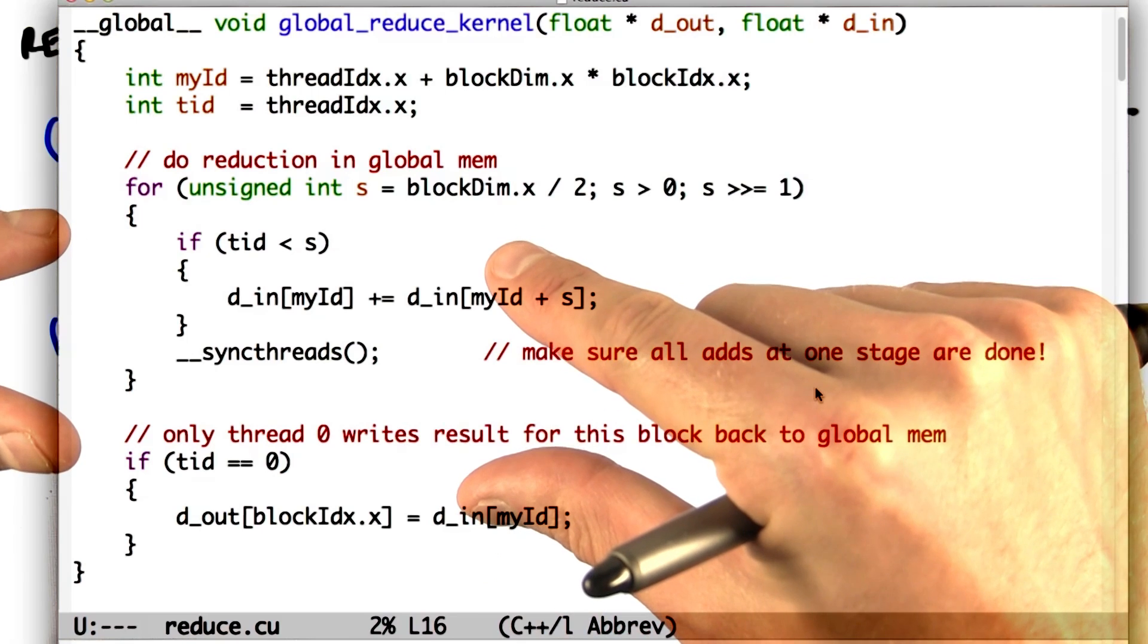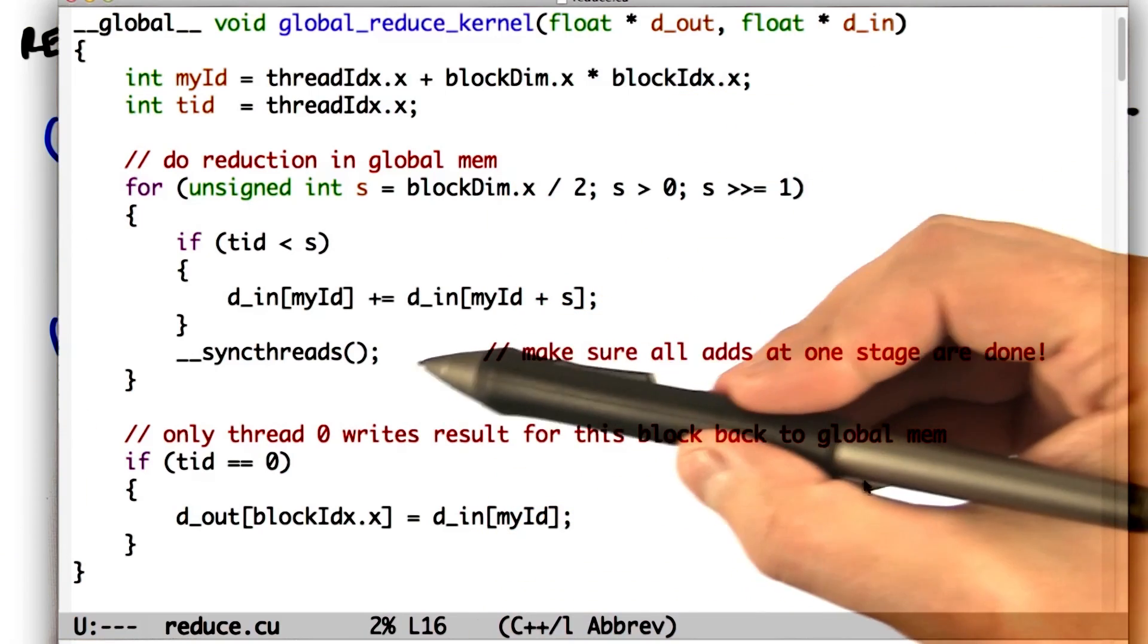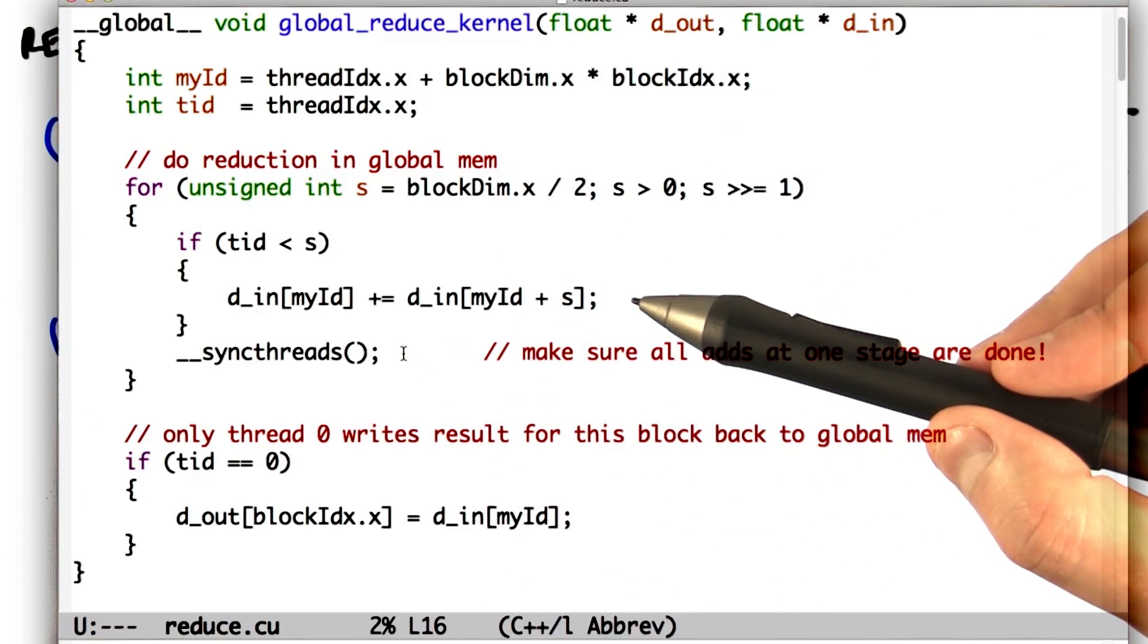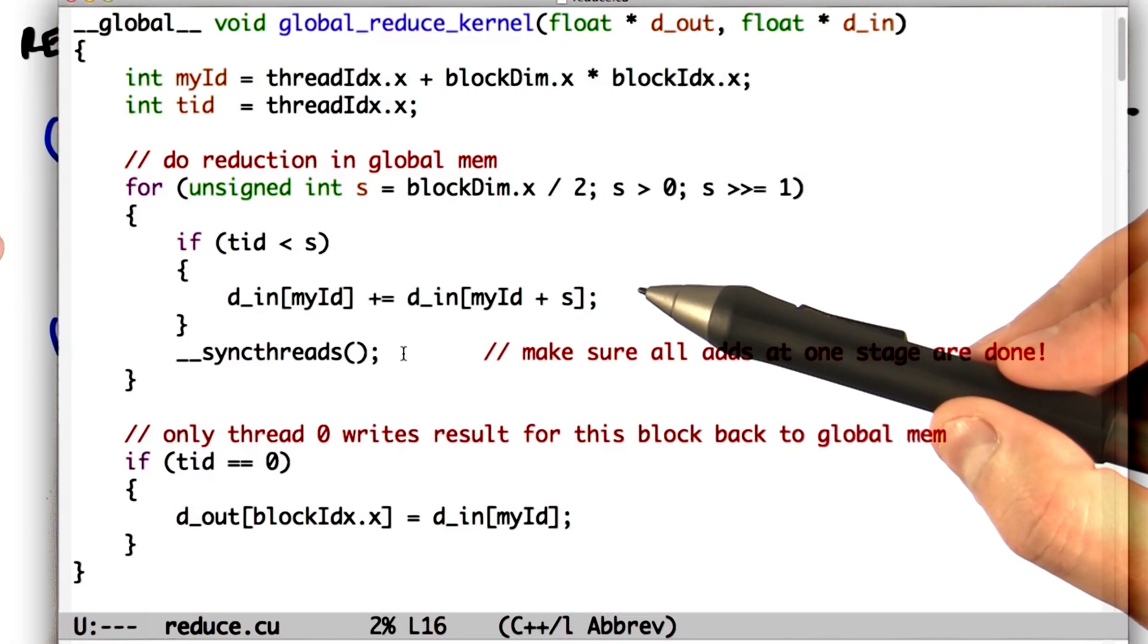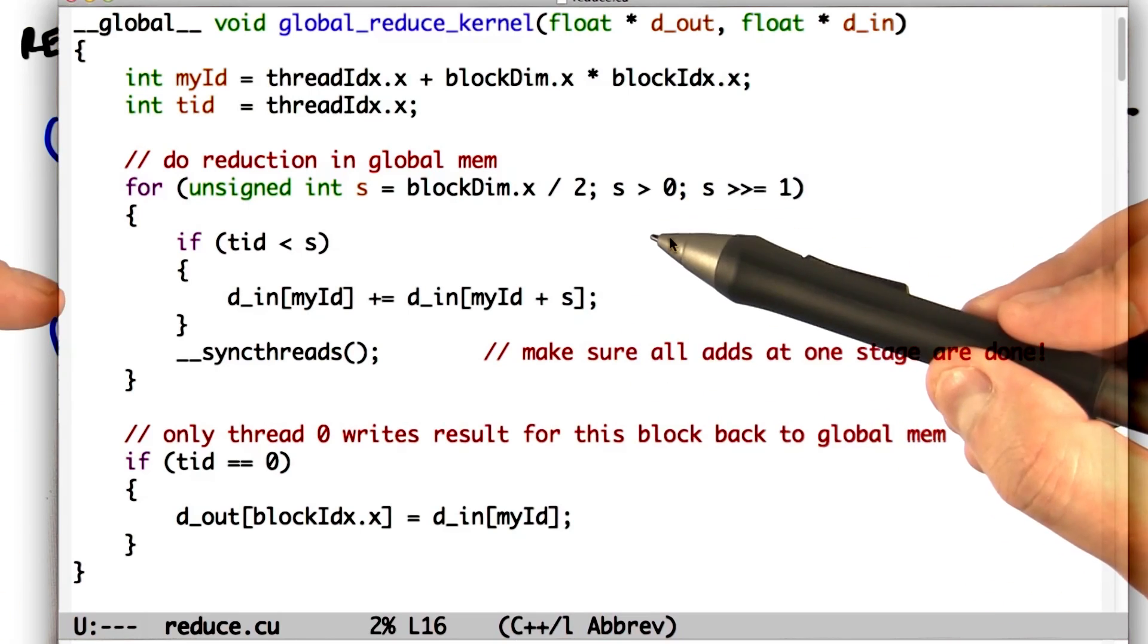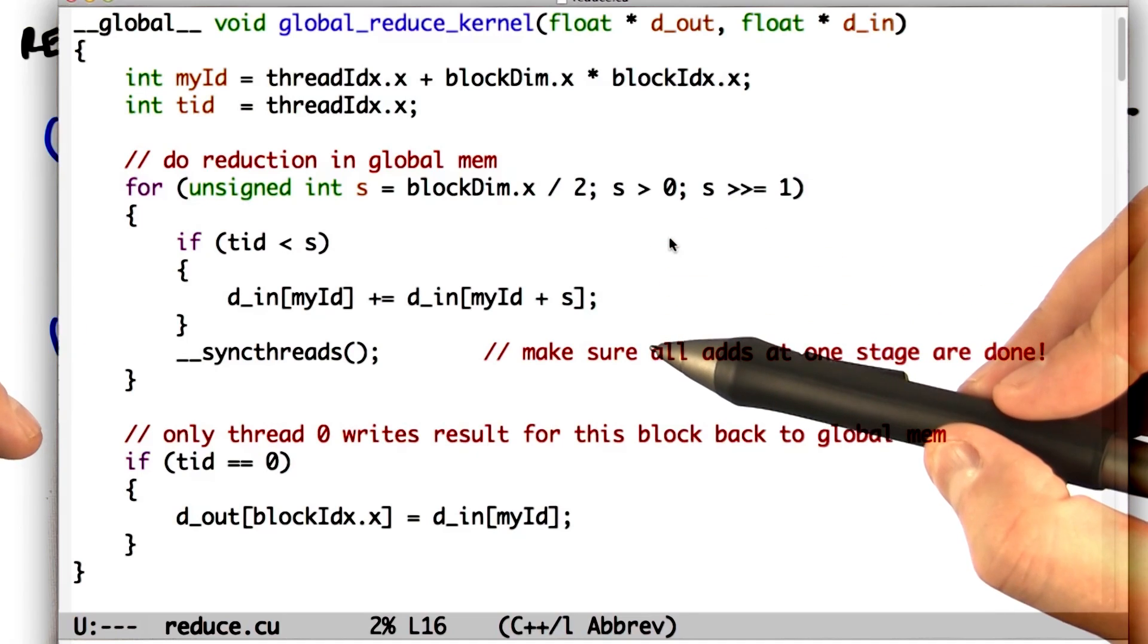Now we'll synchronize all threads with this sync threads call to make sure everyone is done. We've got 512 elements remaining, so we'll loop again on this resulting region of 512 elements.